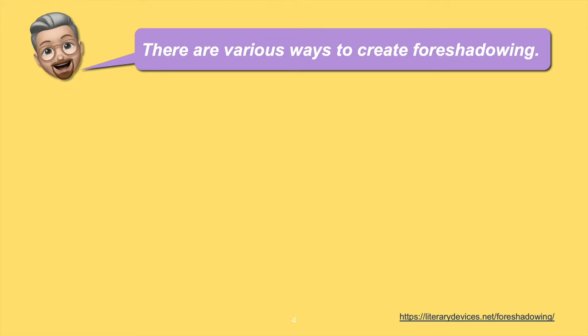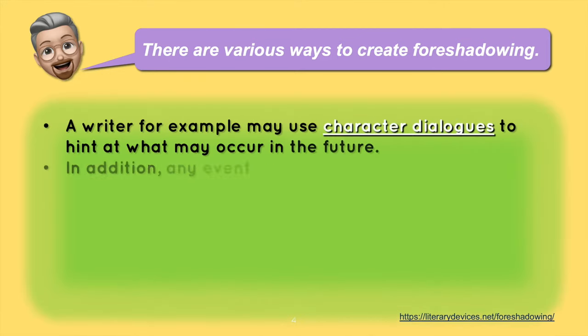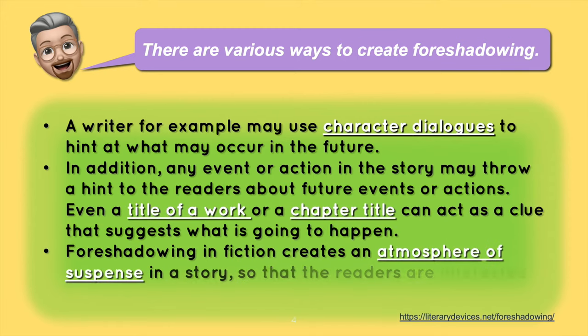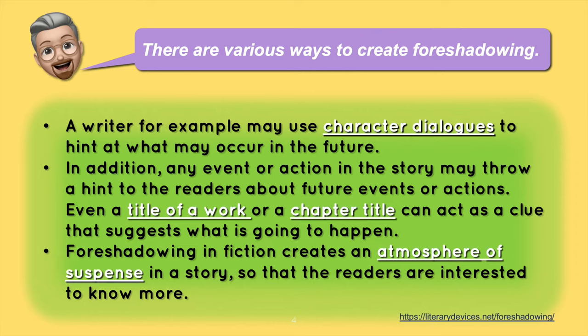There are various ways to create foreshadowing. A writer, for example, may use character dialogues to hint at what may occur in the future. In addition, any event or action in the story may throw a hint to the readers about future events or actions. Even a title of a work or a chapter title can act as a clue that suggests what is going to happen.